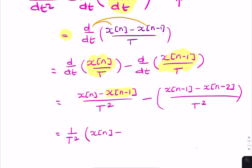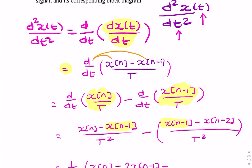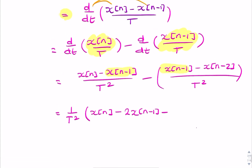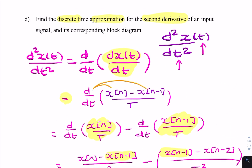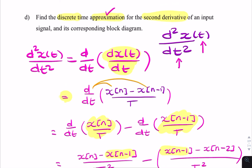We can now write the final result as (1/T²) times [x[n] - 2x[n-1] + x[n-2]], since x[n-1] appears twice and gives a coefficient of -2. That is the final difference equation and it cannot be simplified further. The question also asks for the corresponding block diagram.